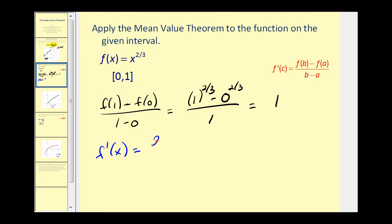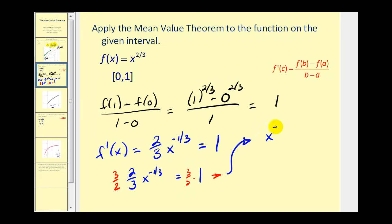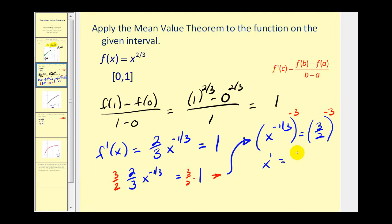Applying the power rule, we'd have two-thirds x to the two-thirds minus one, that'd be negative one-third. We want to know when this is equal to positive one. Multiply both sides by three-halves. We have x to the negative one-third power must equal three-halves. Now we want x to the first, so we'll raise this to the reciprocal, or the negative-third power, giving x to the first. Now three-halves to the negative-third power is the same as three to the negative-third over two to the negative-third, which equals two to the positive-third over three to the positive-third. So x is equal to eight twenty-sevenths, which is in this interval — that's our value of c.